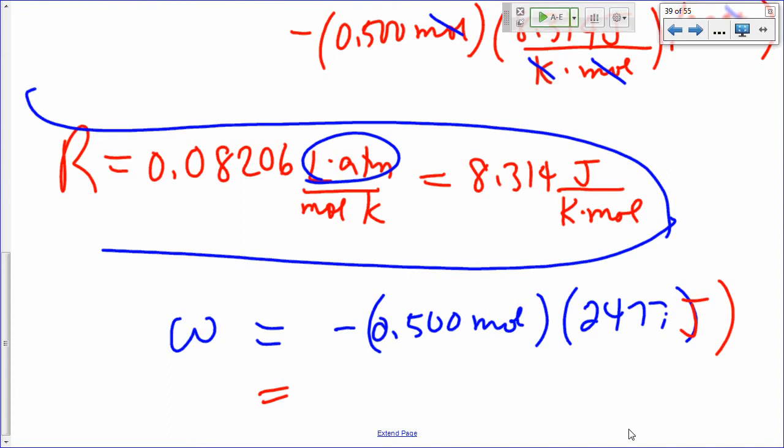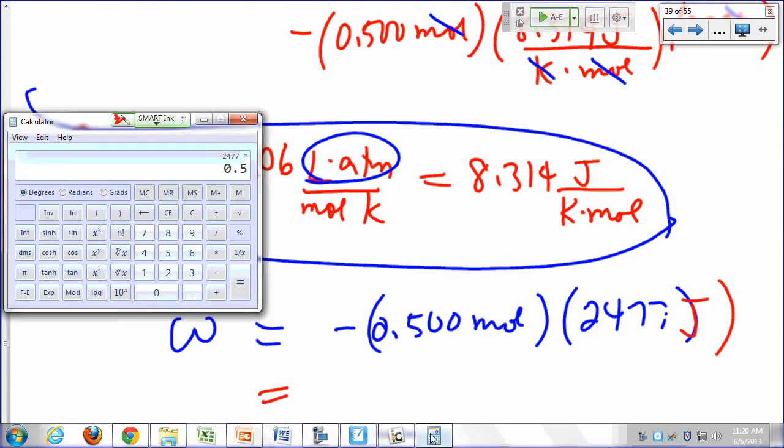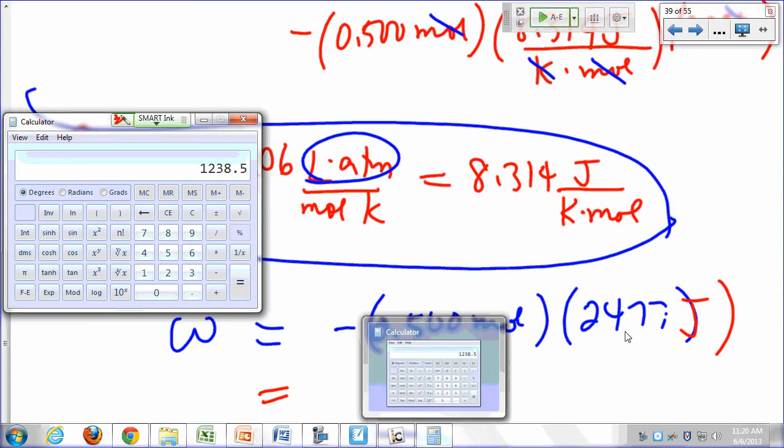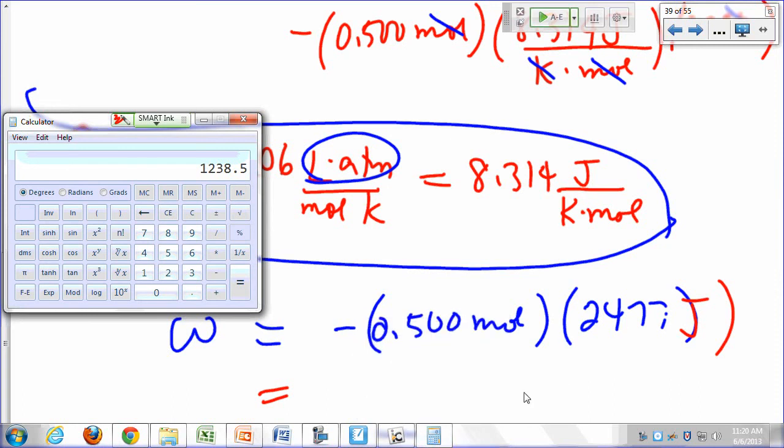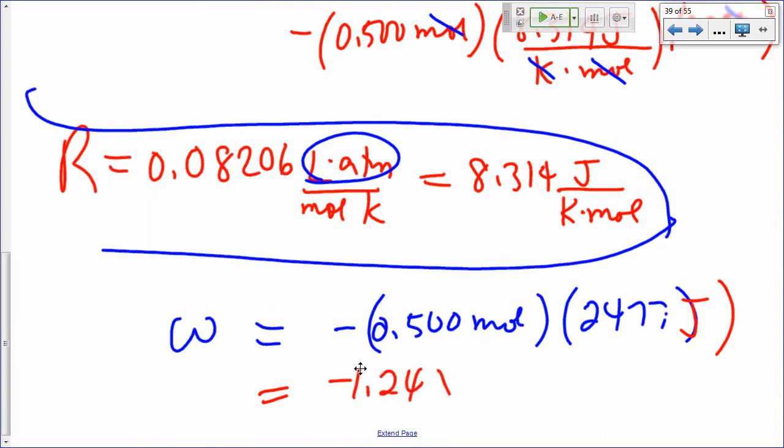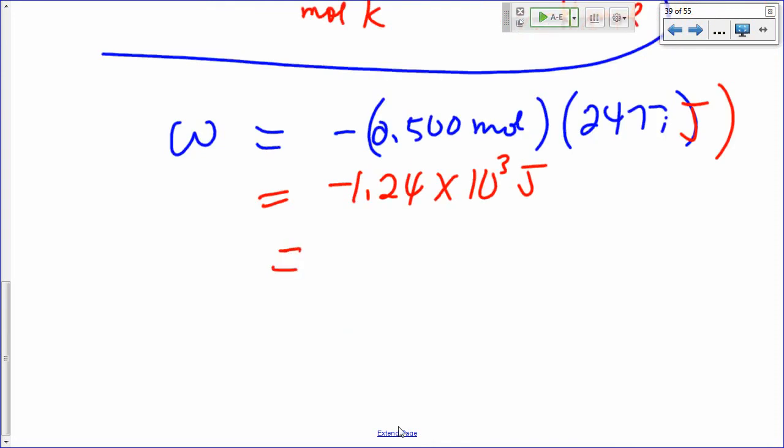So work would be half of that. So 2477 times 0.5, that gives you 1,238. So 1.23, 1.24 times 10 to the third joules. Or negative 1.24 kilojoules.